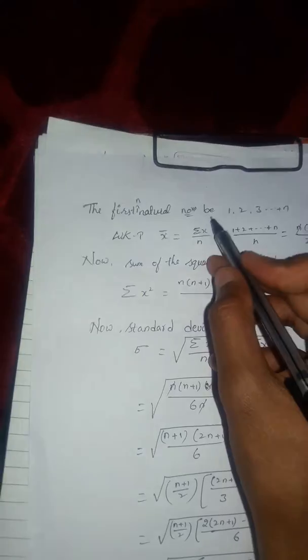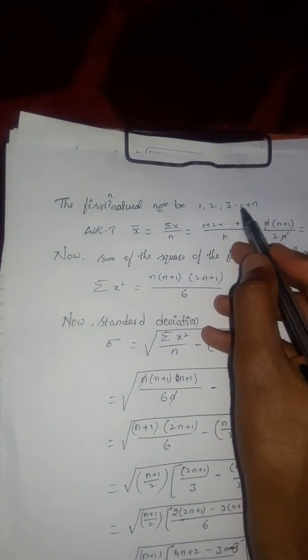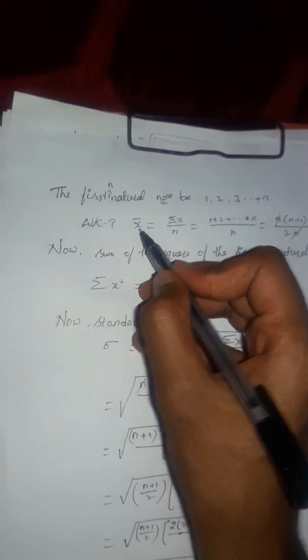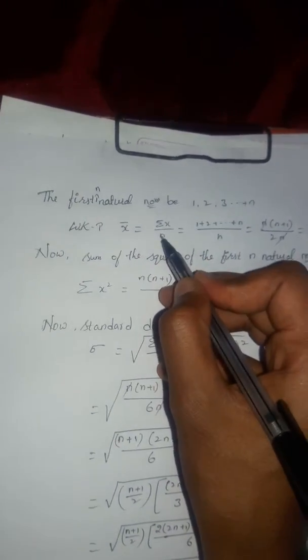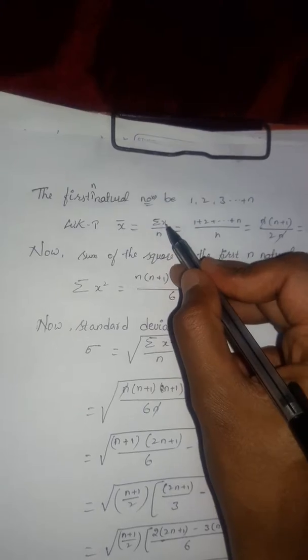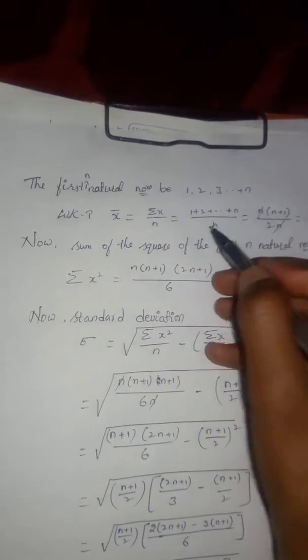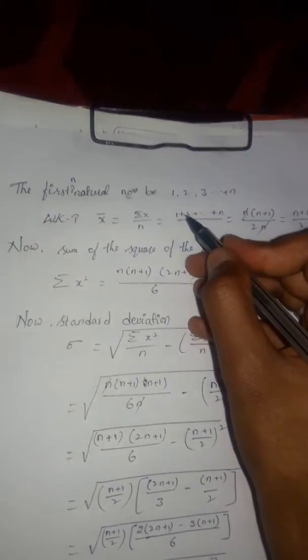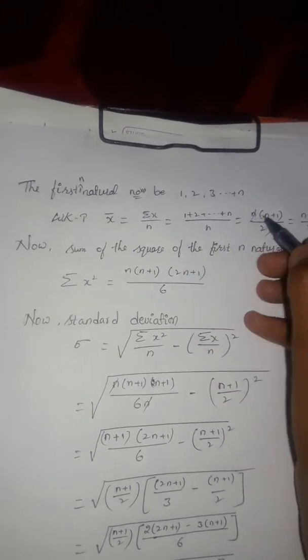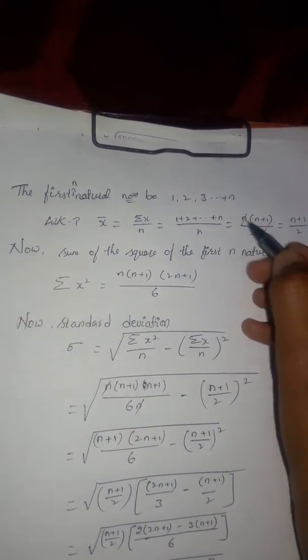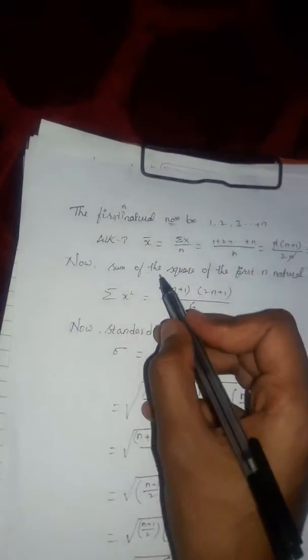The first n natural numbers are 1, 2, 3 continuously up to n. The mean x̄ is equal to σx divided by n. So σx is the sum of all numbers: 1 plus 2 plus up to n, divided by n, which equals n(n+1) divided by 2n. Here n gets cancelled, giving us (n+1) divided by 2.